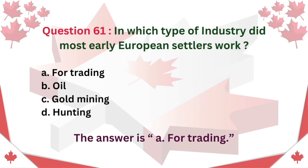Question 61: In which type of industry did most early European settlers work? A. Fur trading. B. Oil. C. Gold Mining. D. Hunting. The answer is A: Fur trading.